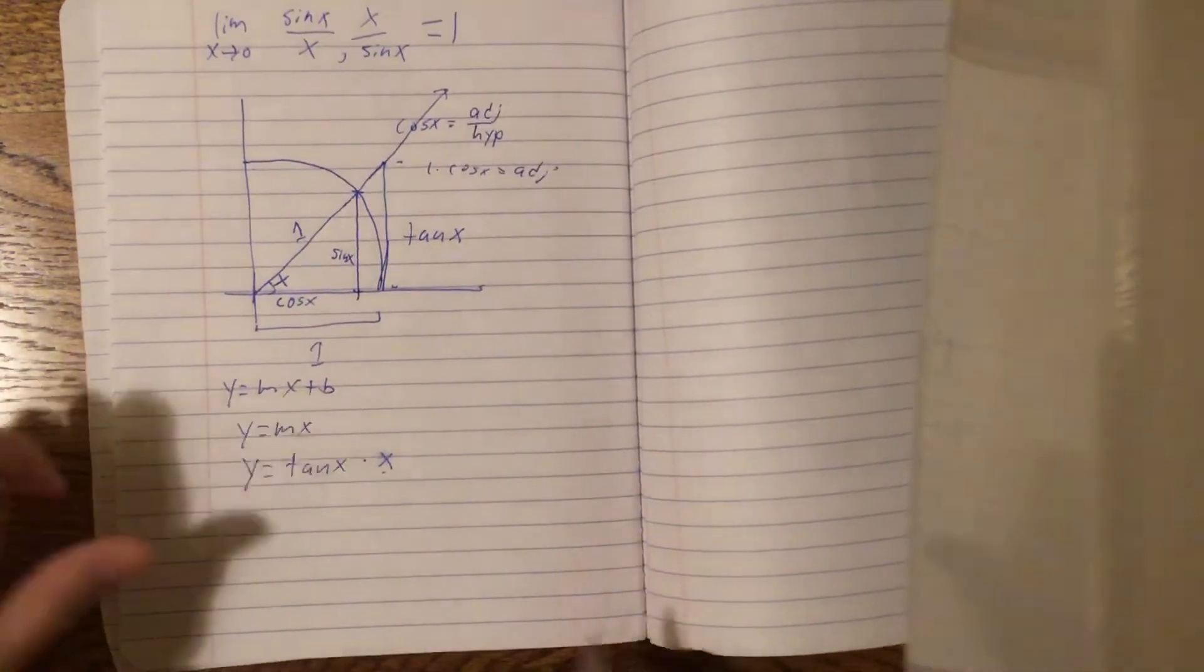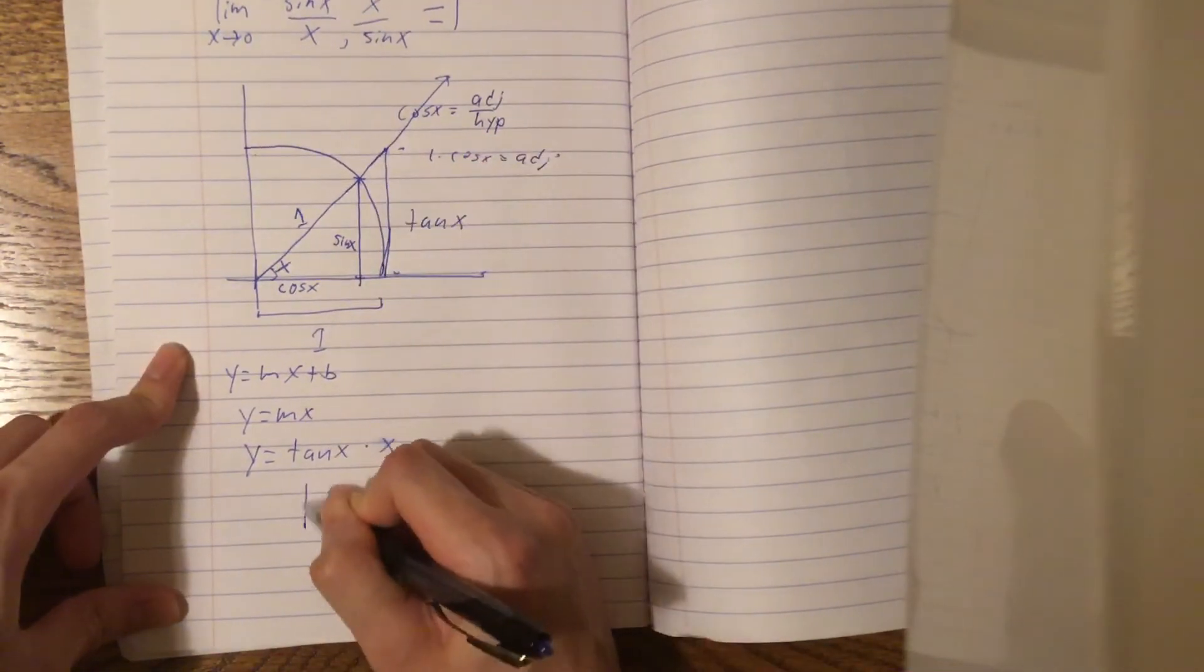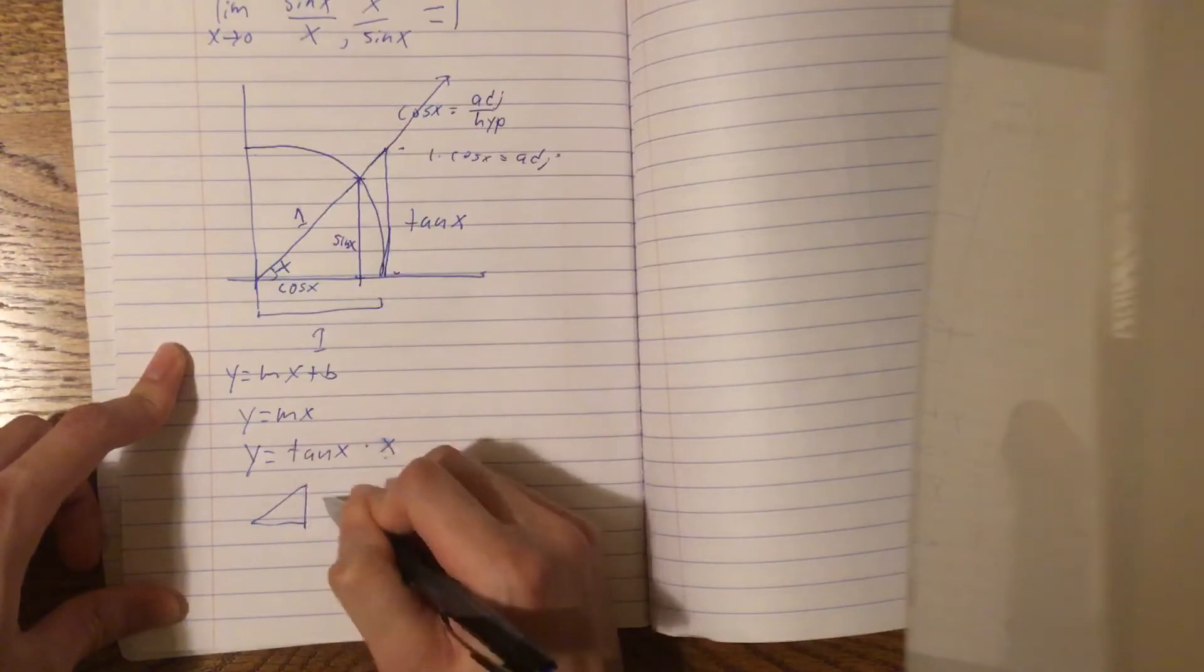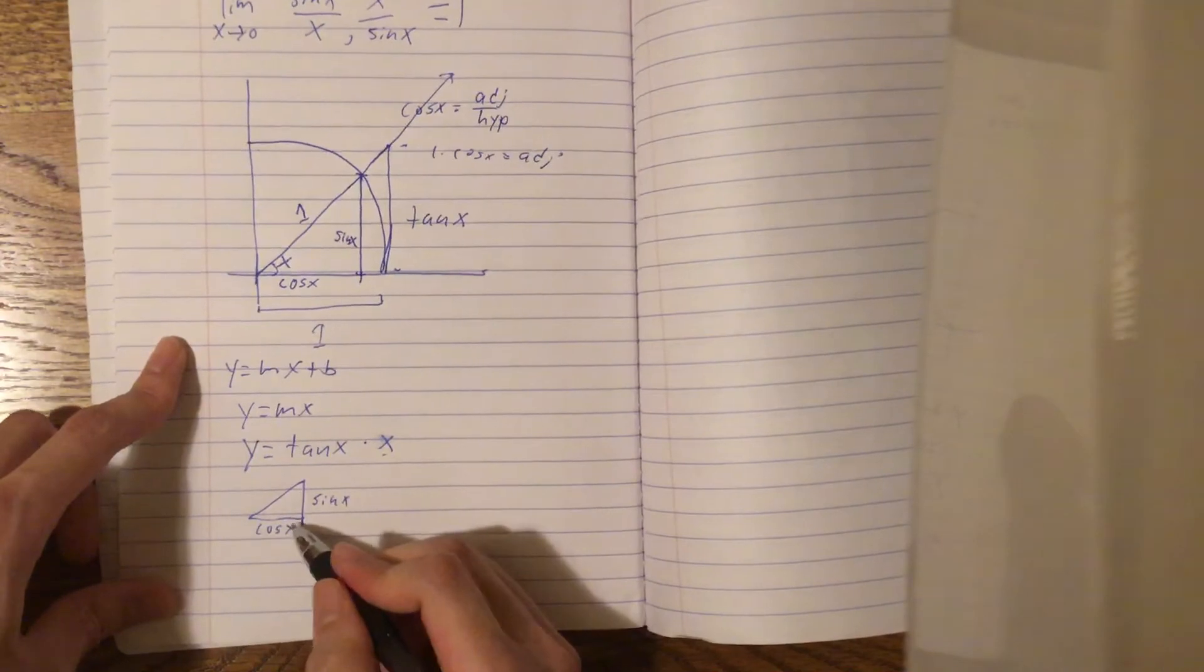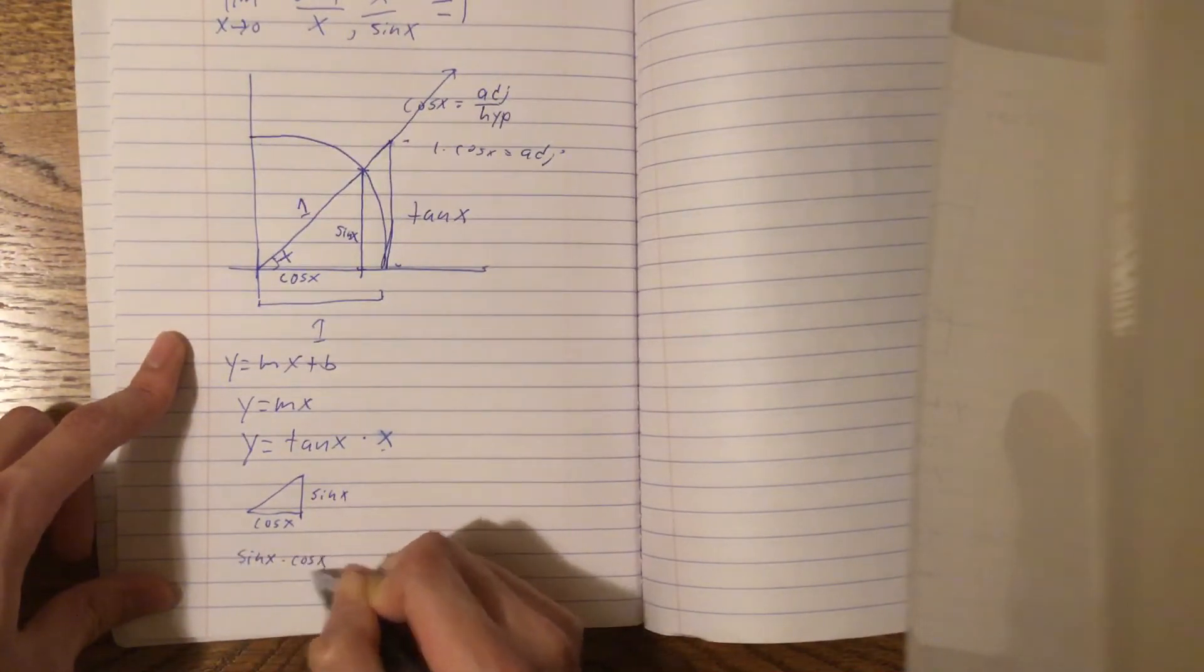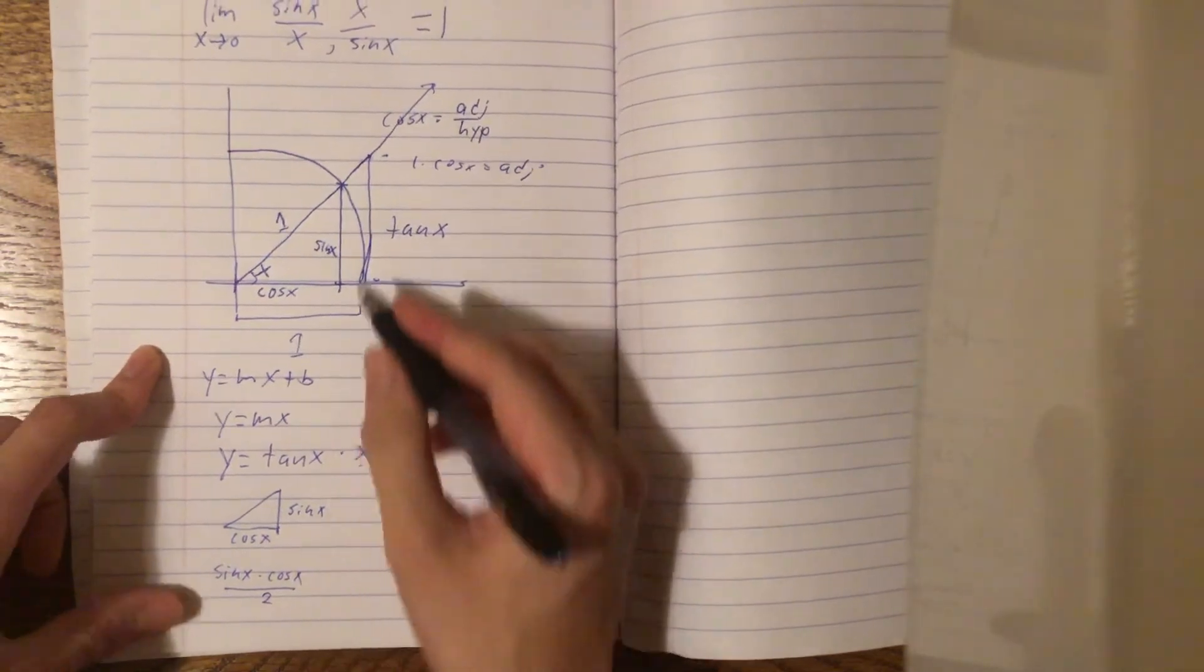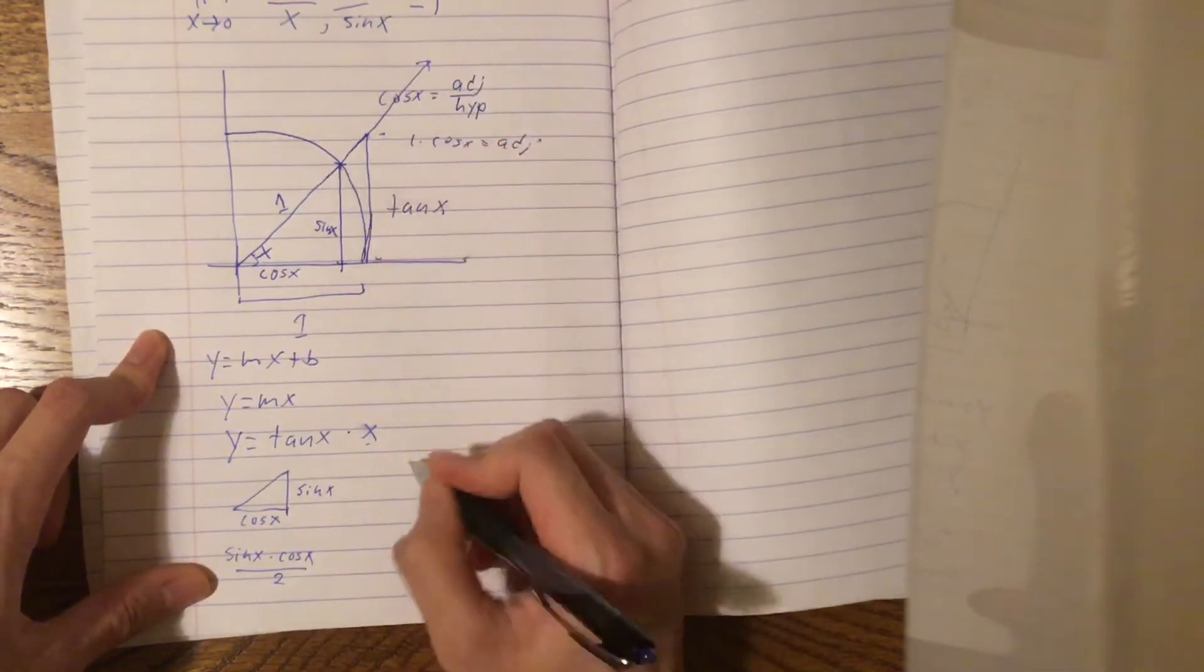Now, we can start the proof. So, the area of this first triangle here, with height sine x, or the smallest triangle, and base cos x, this area is just height times base over 2, one-half bh. And the area of this triangle is going to be smaller than this pi section here.